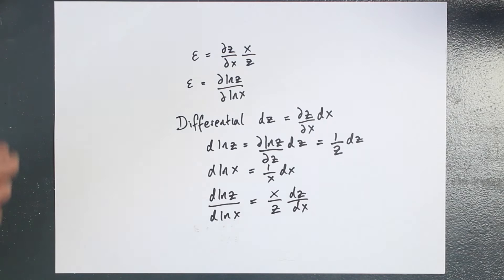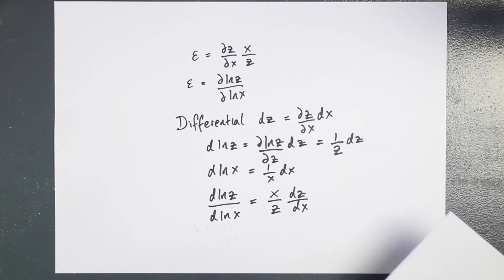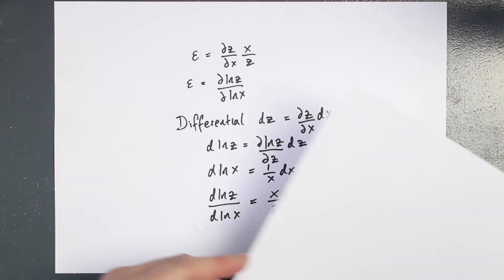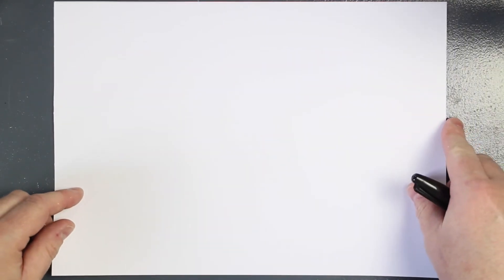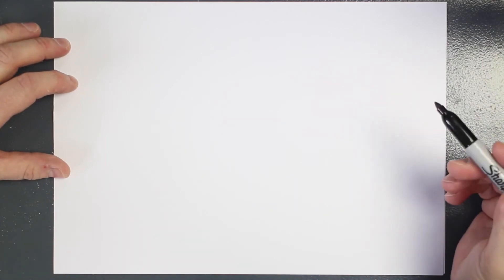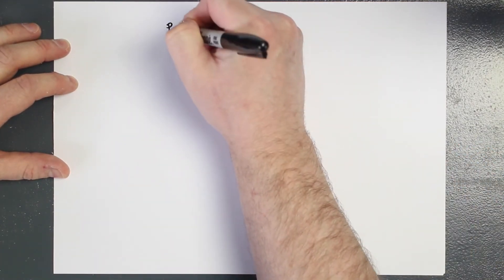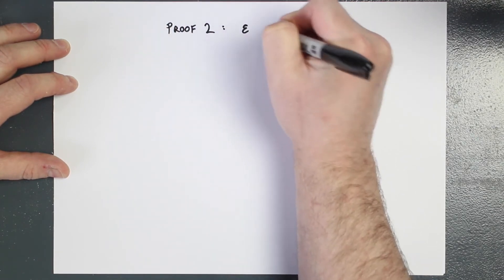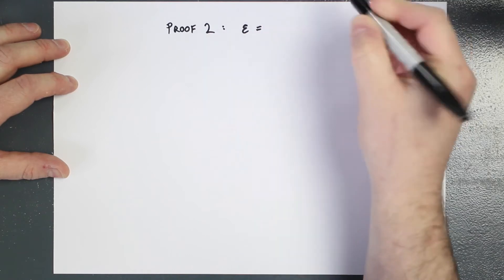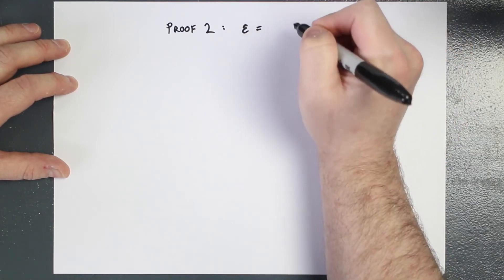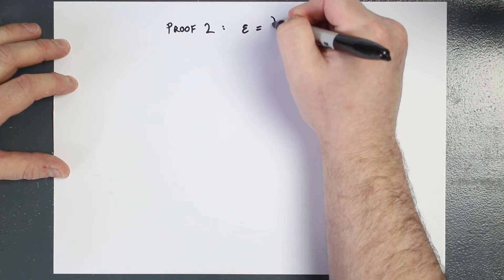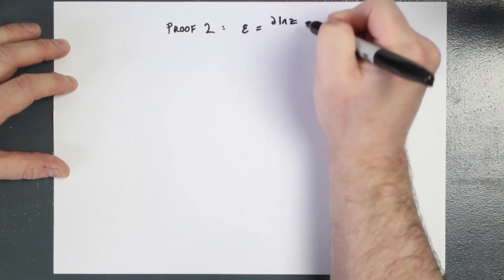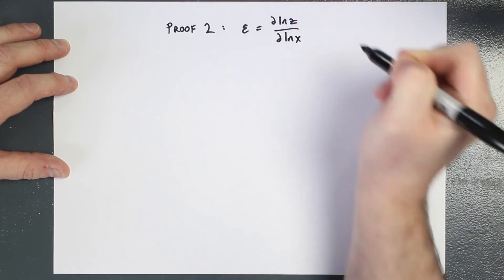So that's the first proof — in inverted commas, because I brought in a technique we haven't seen before. Let me show you another proof using the chain rule. What we're proving is that the point elasticity of z with respect to x equals the partial derivative of log z with respect to log x.